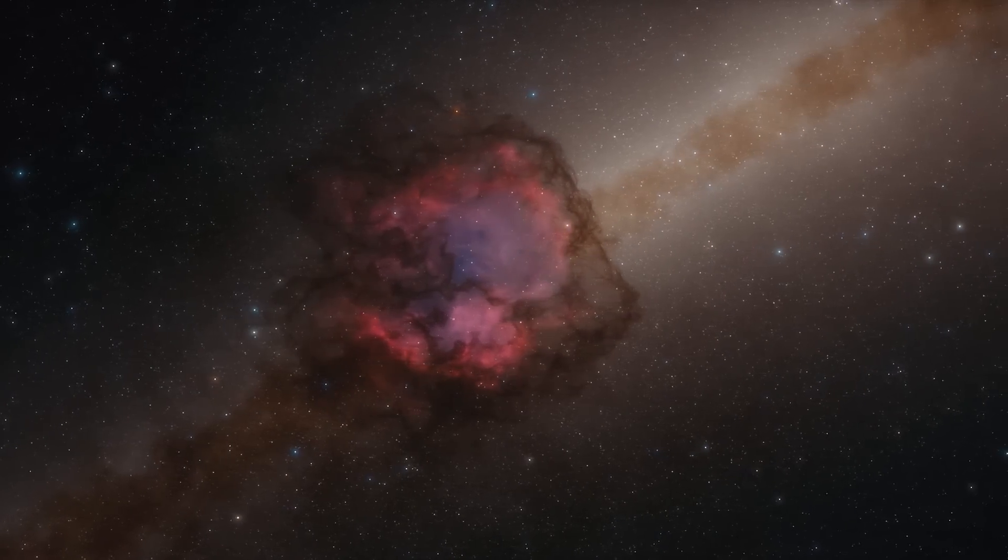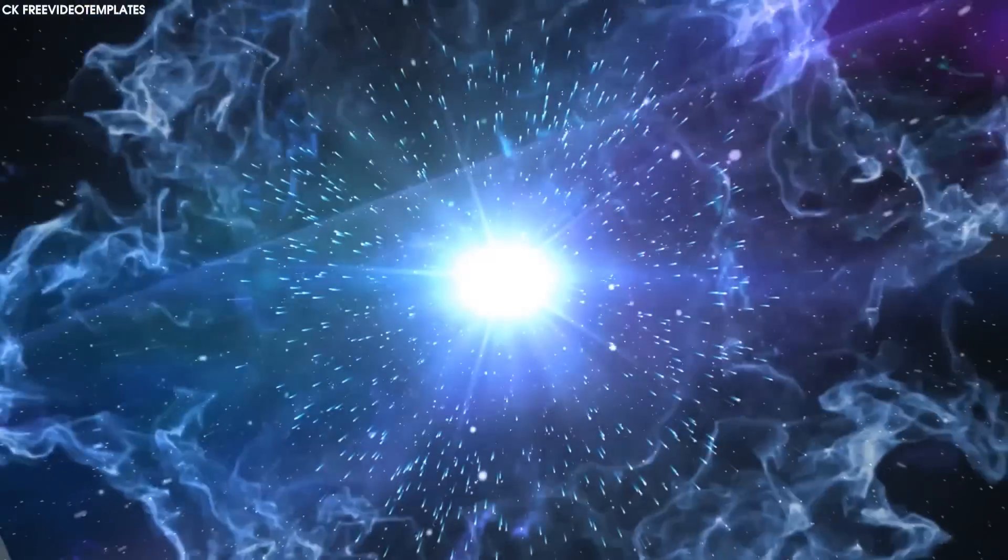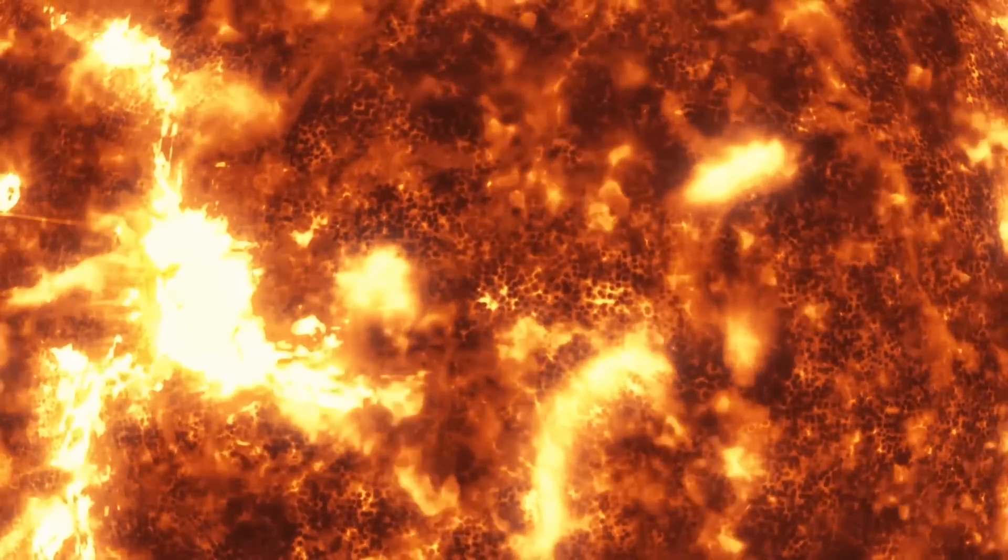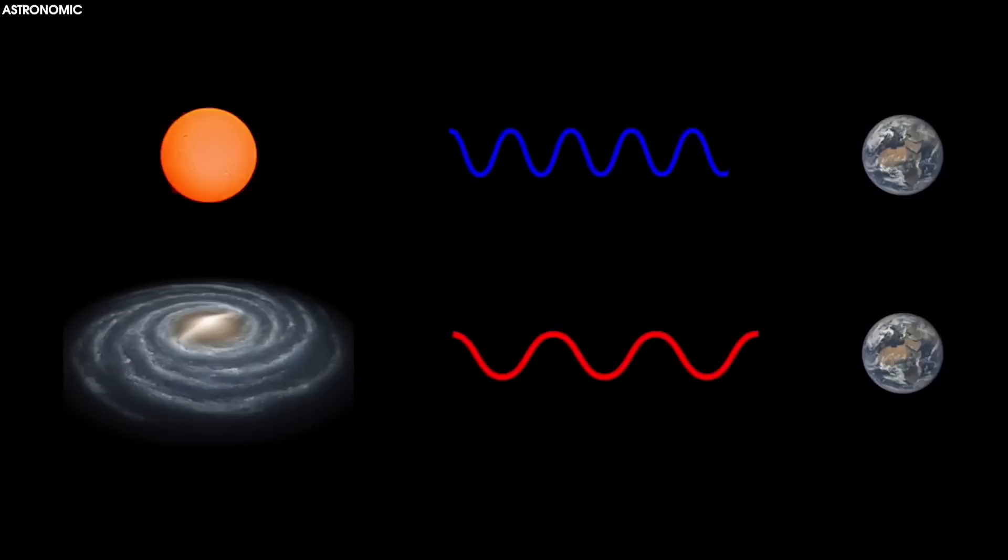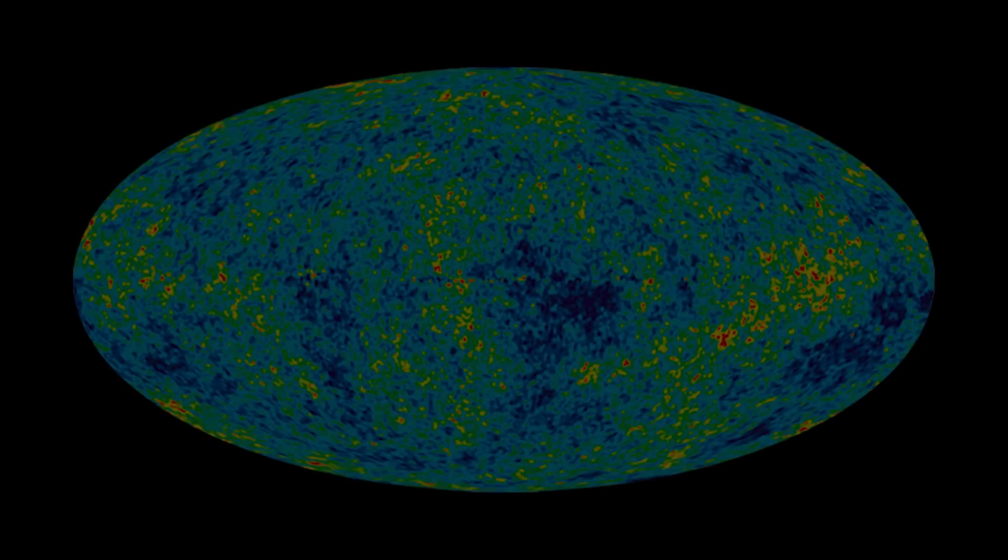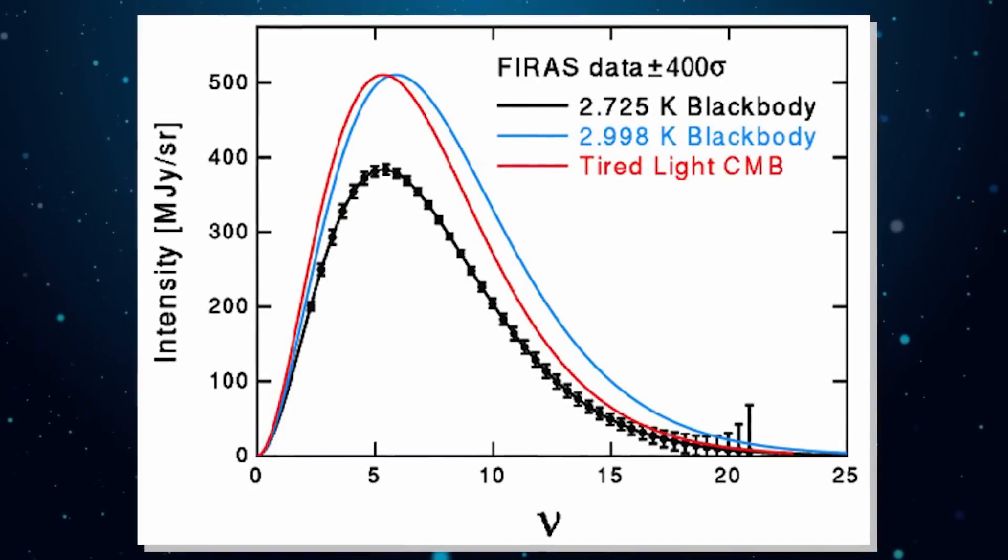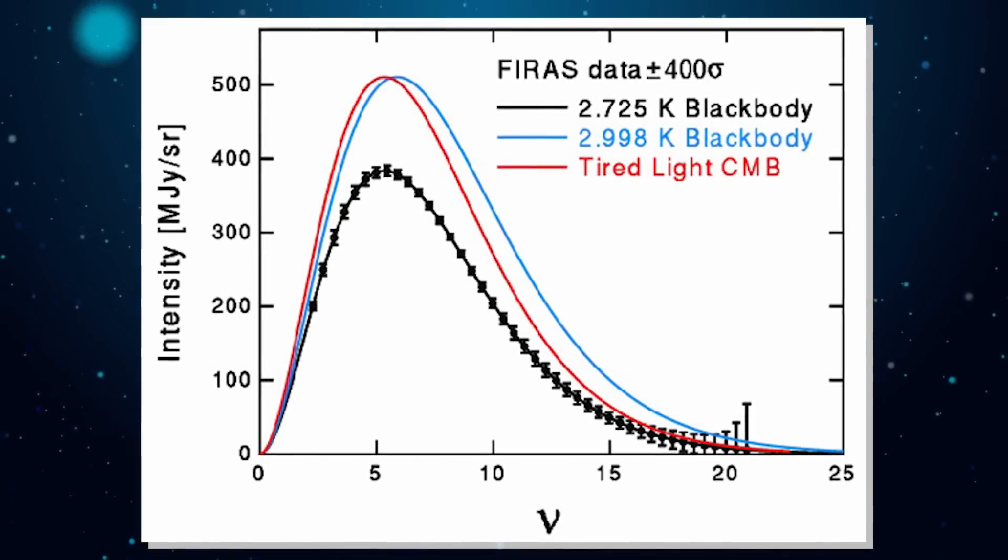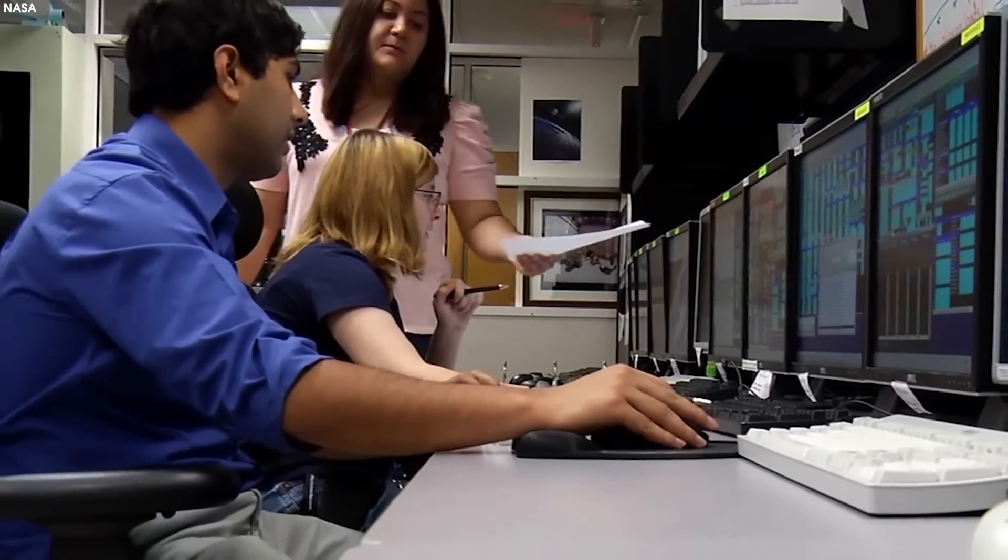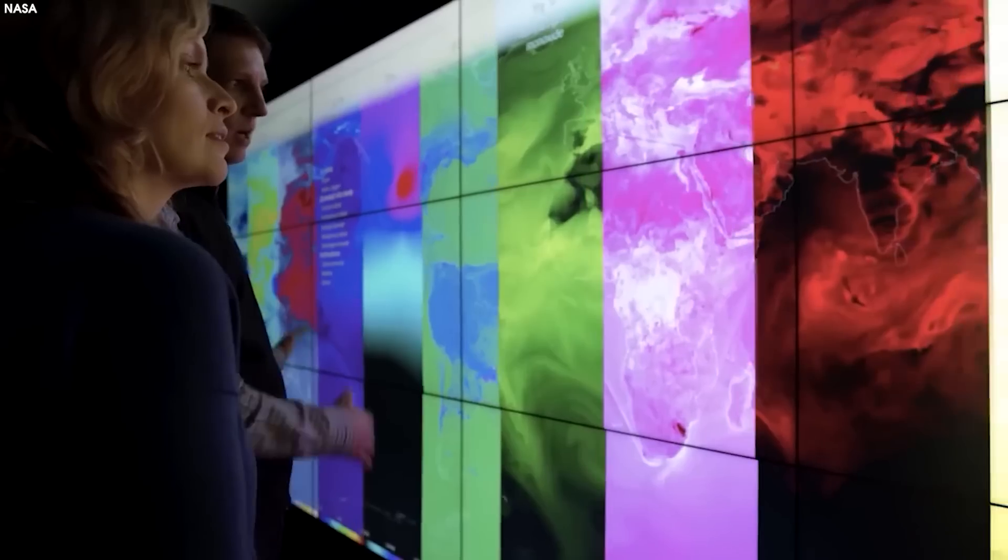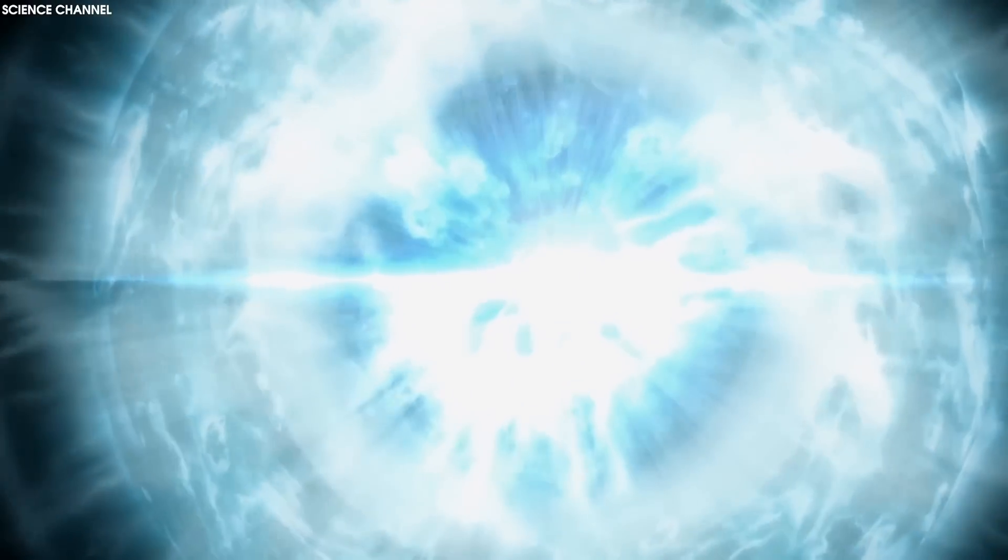We can measure the temperature of the universe as it is today, 13.8 billion years after the Big Bang, by looking at the leftover radiation from that hot, dense, early state. Today this shows up in the microwave portion of the spectrum and is known as the cosmic microwave background. Coming in with a black body spectrum and a temperature of 2.725 kelvins, it's easy to confirm that these observations match with incredible precision the predictions that arise from the Big Bang model of the universe.